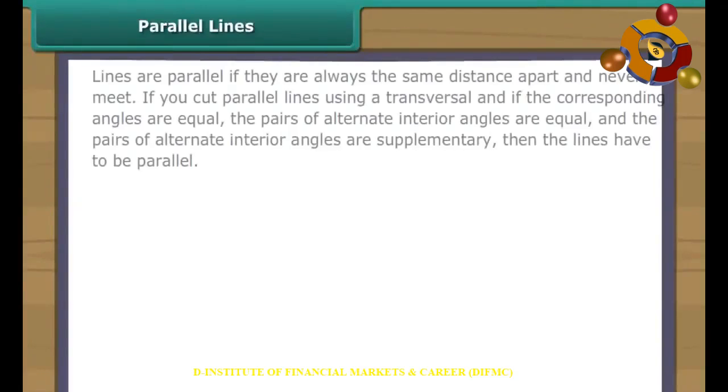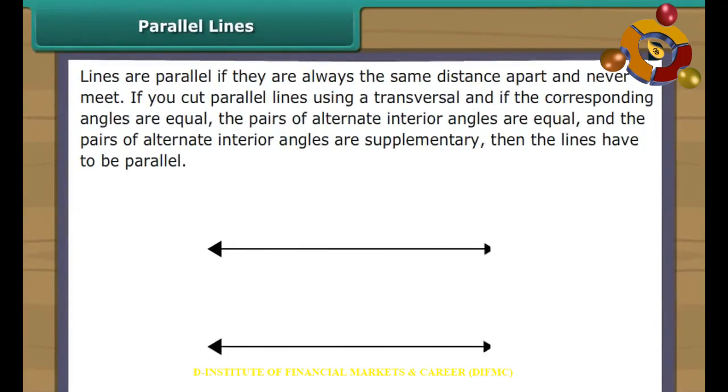Parallel lines. Lines are parallel if they are always the same distance apart and never meet. You can also check if lines are parallel by cutting the lines using a transversal. If the corresponding angles are equal, the pairs of alternate interior angles are equal, and the pairs of alternate interior angles are supplementary, then the lines have to be parallel.